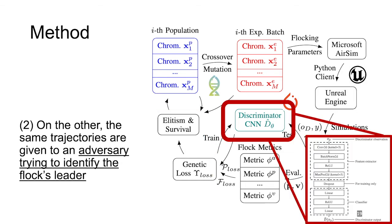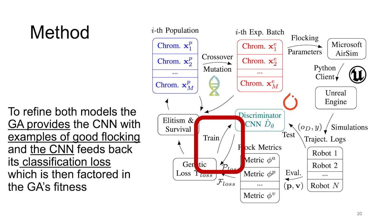On the other hand, the same trajectories are given to an adversary trying to identify the flock's leader. In our implementation, we design our adversary as a convolutional neural network with the architecture shown here, with convolutional, batch norm, and max pooling layers followed by two linear ones. To refine both models, the GA provides the CNN with examples of good flocking, and the convolutional neural network feeds back its classification loss, which is factored into the GA's fitness function.